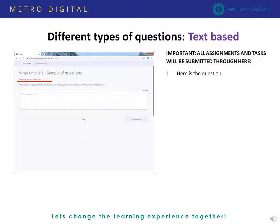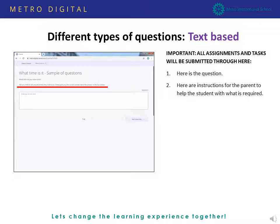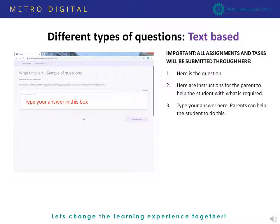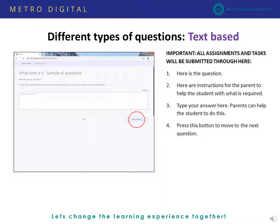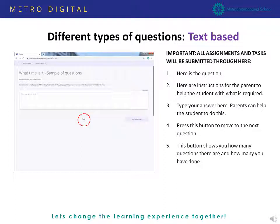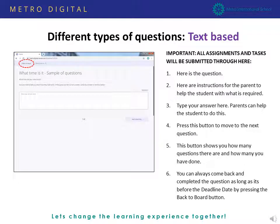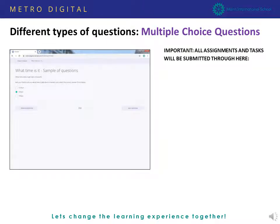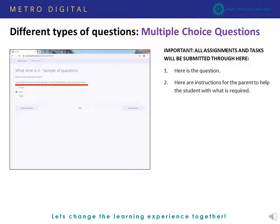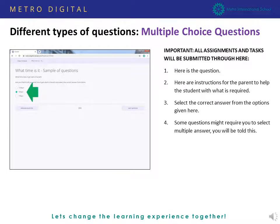For text-based questions, you will first see the question and an explanation for your child to understand. Then there is a box where you will write the answer. You can help your children and give them the keyboard, or if they are small children, ask them verbally and then type the answer in. You will see a 'Next Question' button to proceed. Another question style is multiple choice — you read the question, observe the instructions, and select one of the answer options. Proceed the same way through to the last page.